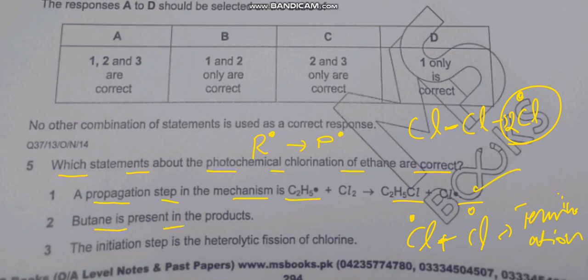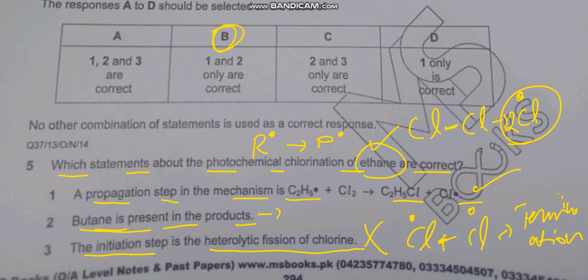Butane is present in the products — as studied in question two, ethane can produce butane via the termination step. The initiation step involves homolytic fission, not heterolytic fission. So statements one and two are correct, making option B the correct answer.